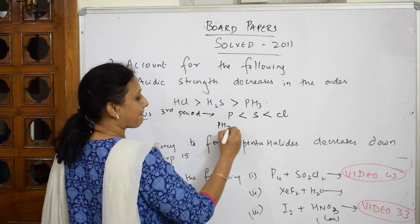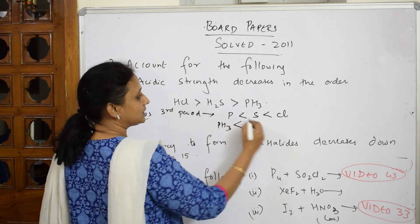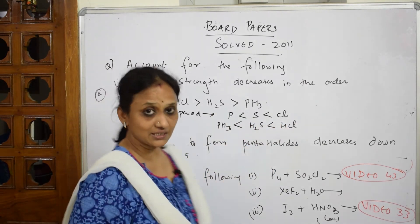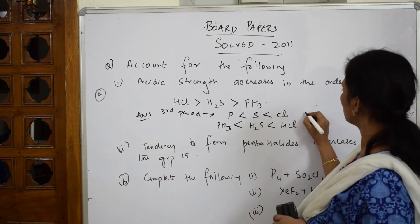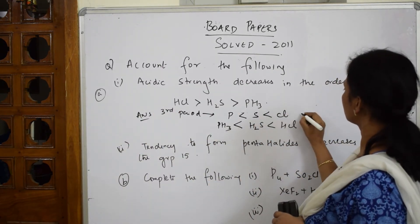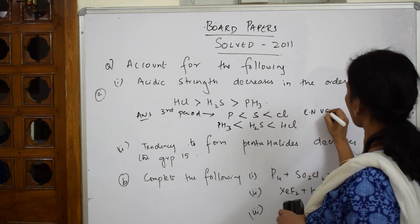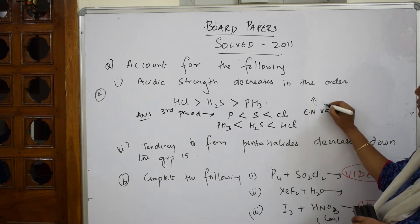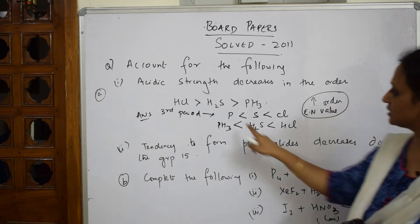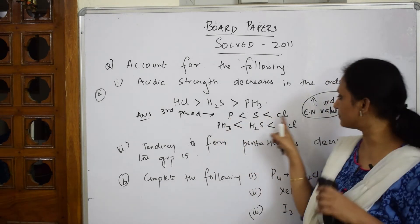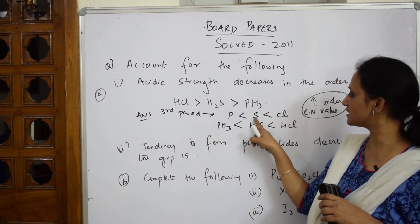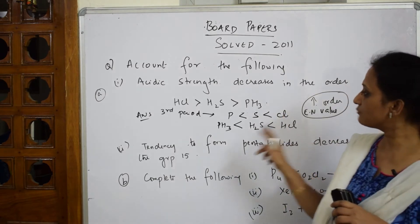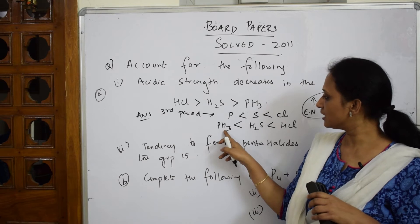When the electronegativity is lesser, let's write the hydride forms: PH3 < H2S < HCl. This is increasing order of electronegativity value. Phosphorus is less electronegative compared to chlorine. Phosphorus electronegativity is less than sulfur, sulfur's electronegativity is less than chlorine.